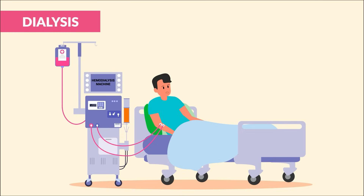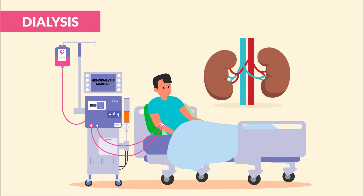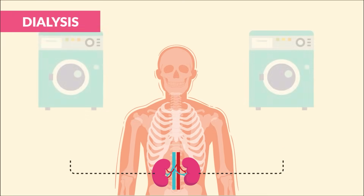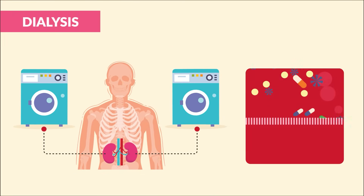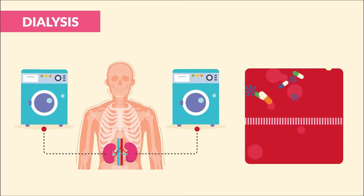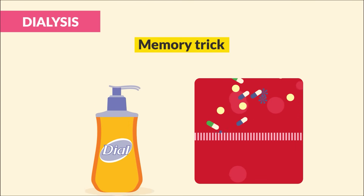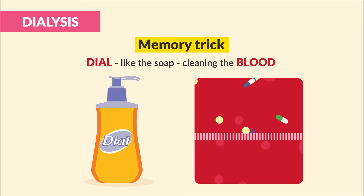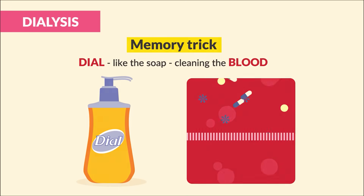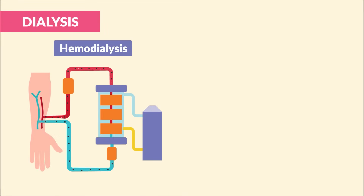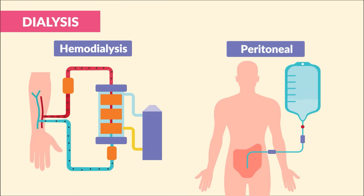Dialysis is the machine version of the kidney, used for our clients in renal failure. Just like the kidney, dialysis helps to clean the blood like a washing machine, by filtering out waste and flushing out excess fluid and electrolytes. The memory trick: anytime you see the word dial for dialysis, just think dial like the soap — it helps to clean the blood. Now we have two types: hemodialysis and peritoneal dialysis.